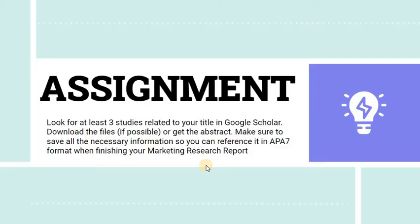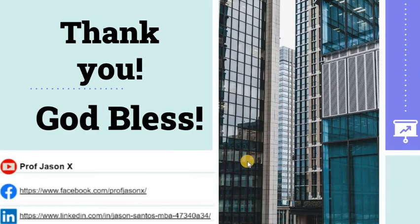That's it for our third topic. What I need you to do is look for at least three studies related to your title through Google Scholar. If you can download the file, that would be better; if not, just get the abstract from the publication, and make sure to save all the necessary information so you can reference it later in APA 7 format. That will be included in your own marketing research report. Thank you so much, and I hope you learned something from this discussion. I will see you in the next lecture.